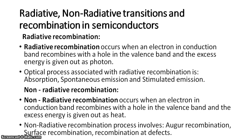When the recombination takes place, energy is given out. In the case of radiative recombination, this excess energy is given out in the form of a photon. The optical processes associated with radiative recombination are absorption, spontaneous emission, and stimulated emission.